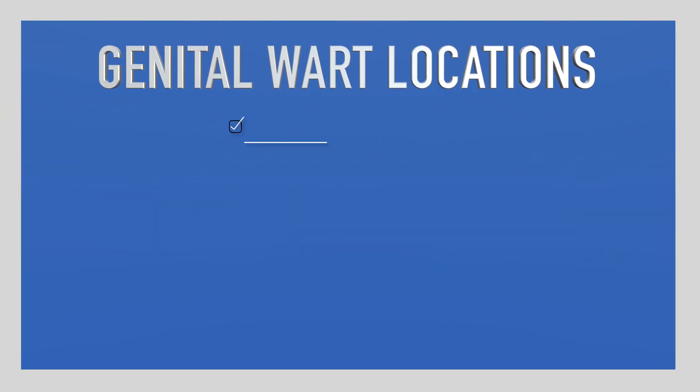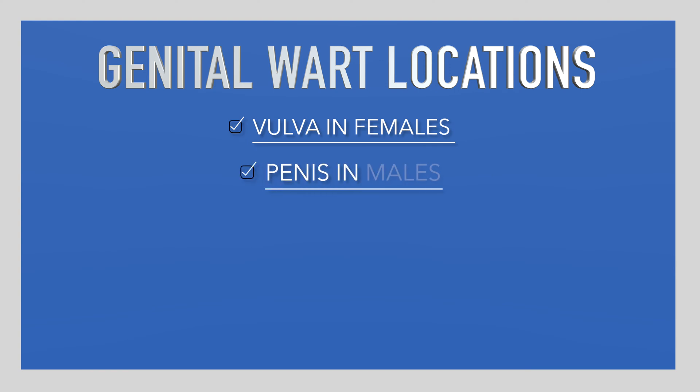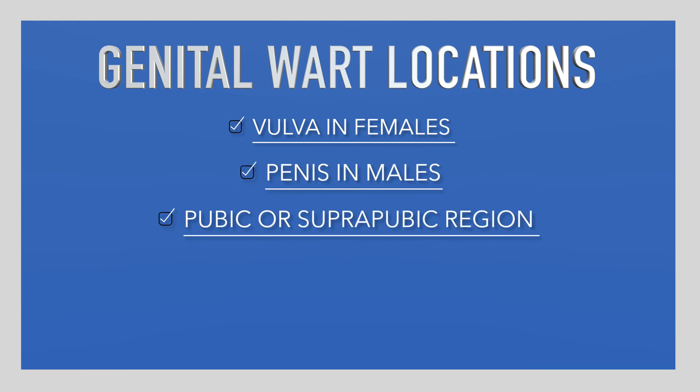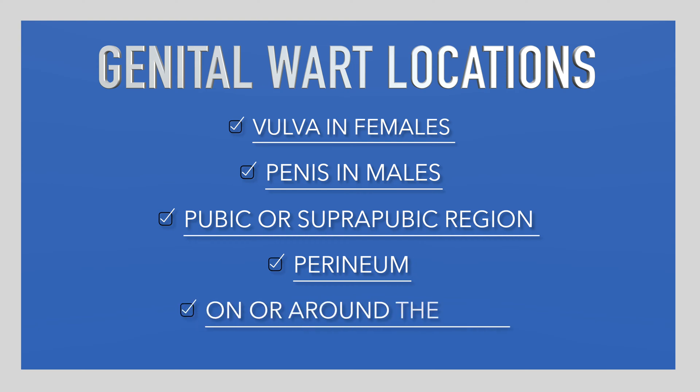Genital warts can be seen throughout the genital region — for example, on the vulva of females, the penis in males, and the pubic region of both males and females. They can also be seen on the perineum, which is the space between the genitals and the anus, and on or around the anus. I'm going to put some pictures in this video — viewer discretion is advised. When genital warts pop up, they're papules, also called bumps, and they have a cauliflower appearance, a dome-shaped appearance, or sometimes they can look like skin tags.